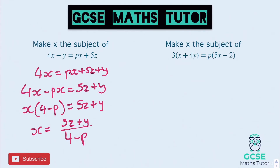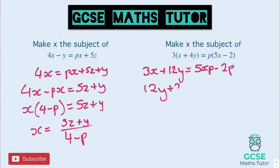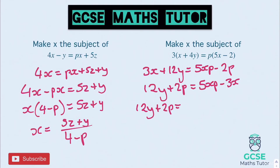On the right-hand side here, let's expand both these brackets. So we get 3x plus 12y equals 5xp minus 2p. I'm going to do a little shortcut — I'm going to add the 2p to the left and subtract the 3x at the same time. So we've got 12y plus 2p, and 5xp minus 3x. Now we can factorise the right-hand side. So we have 12y plus 2p equals x brackets 5p minus 3.